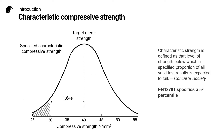It's very important to understand what is meant by the characteristic compressive strength. The Concrete Society describes it as that level of strength below which a specified proportion of all valid test results is expected to fall. For EN 13791, this is the fifth percentile. That means when tests are carried out all over the test region, only five percent of them would be expected to lie below the characteristic strength.